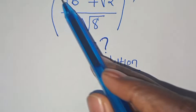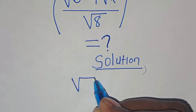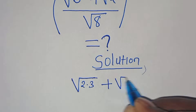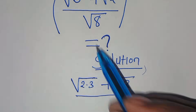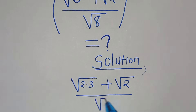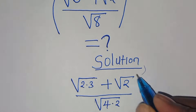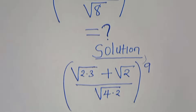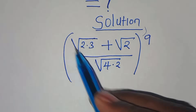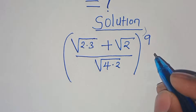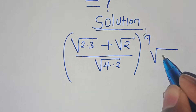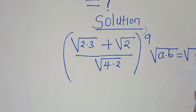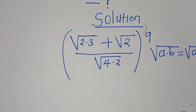We can express the square root of 6 as square root of 2 times 3, then plus square root of 2, divided by square root of 8 which we can express as square root of 4 multiplied by 2, everything raised to the power of 9. Now square root of 2 times 3 and square root of 4 times 2 are in the form of square root of a multiplied by b, which we can express as square root of a times square root of b.